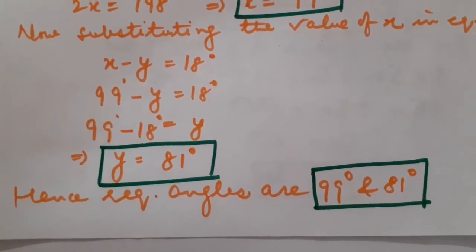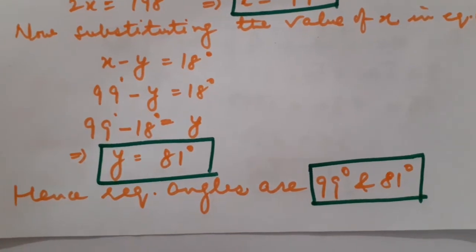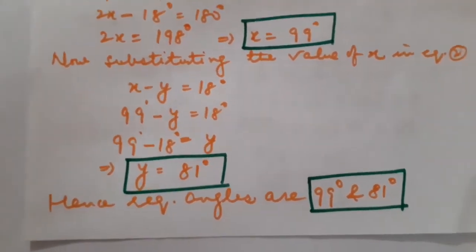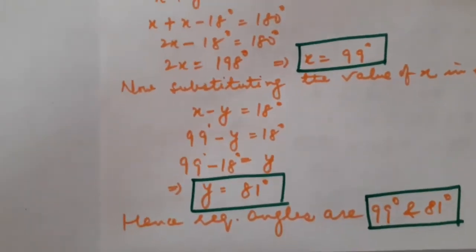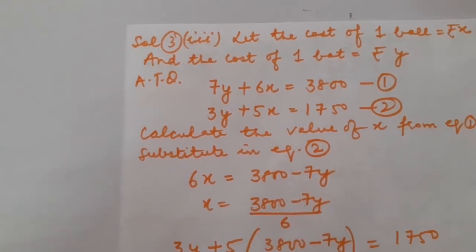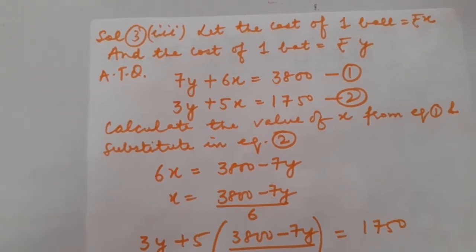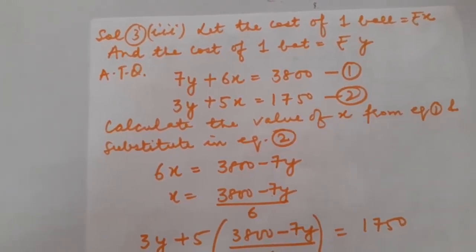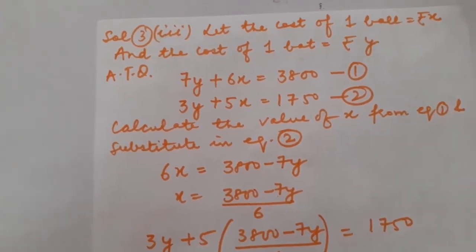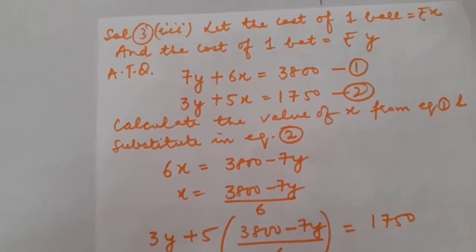Just to verify whether the answer is correct: add both angles. Their sum is 180 degrees, confirming they are supplementary. Now switch to the next question. Question number 3, third part, Exercise 3.3 using Substitution Method. The coach of a cricket team buys 7 bats and 6 balls for Rs. 3,800. Later she buys 3 bats and 5 balls for Rs. 1,750. Find the cost of each bat and each ball.